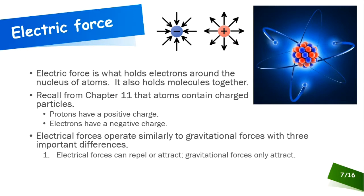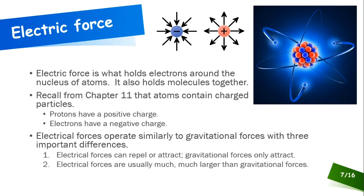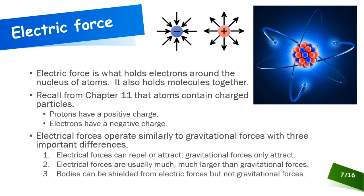First, electrical forces can repel or attract, but gravitational forces only attract — there's no such thing as a repulsive gravitational force. Second, electrical forces are usually much larger than gravitational forces — we can generate magnitudes of electrical force far exceeding those of gravity. Third, bodies can be shielded from electric forces, but not from gravitational forces — there's no such thing as a gravity shield.